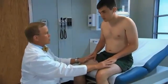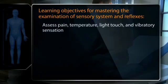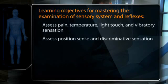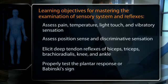Your learning objectives for mastering the examination of the sensory system and reflexes are to assess pain, temperature, light touch, and vibratory sensations, as well as position sense and discriminative sensation, and to correctly elicit the deep tendon reflexes of the biceps, triceps, brachioradialis, knee or patellar tendon, and ankle or Achilles tendon, as well as to properly test the plantar response or Babinski sign.